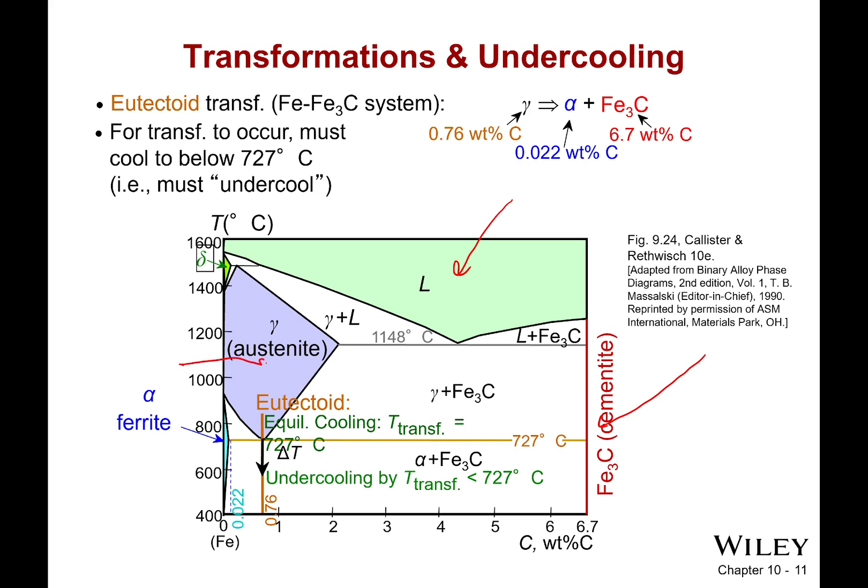Over here I have austenite. That is a repeating structure of carbon and iron. In this case, the carbon is not an impurity; it is actually kind of equidistant throughout it, and this is face-centered cubic.